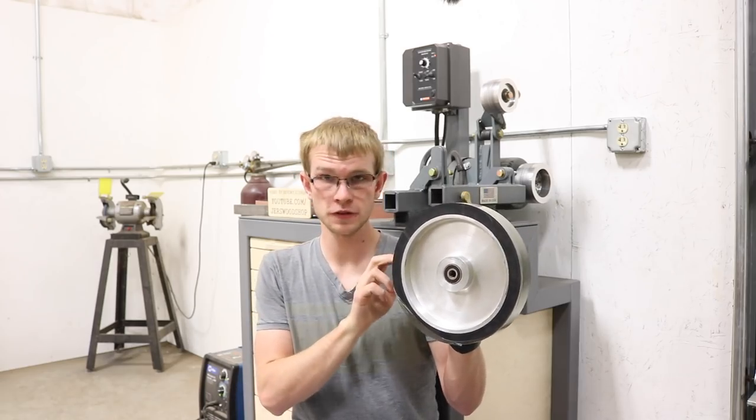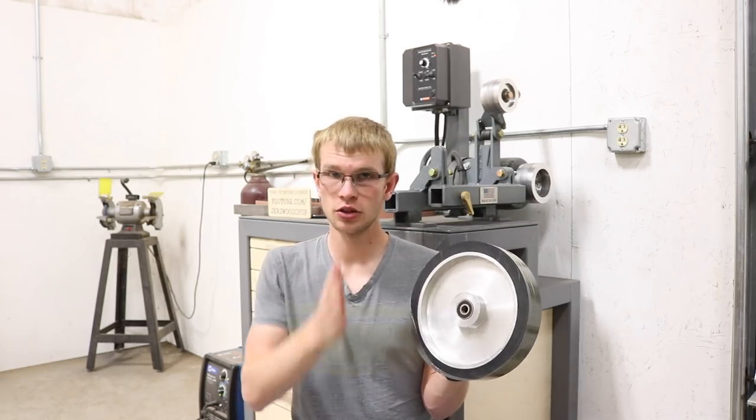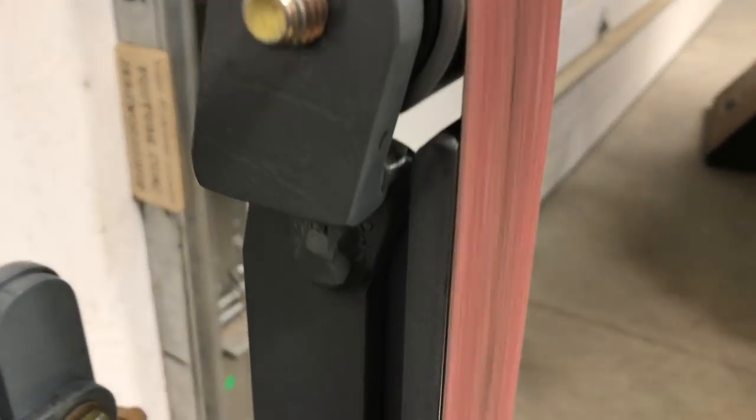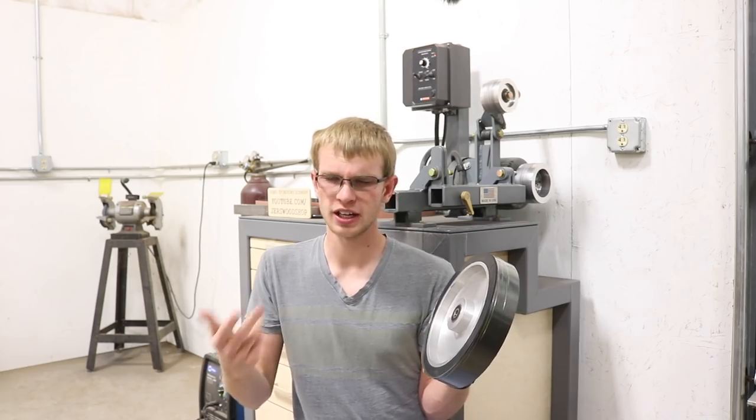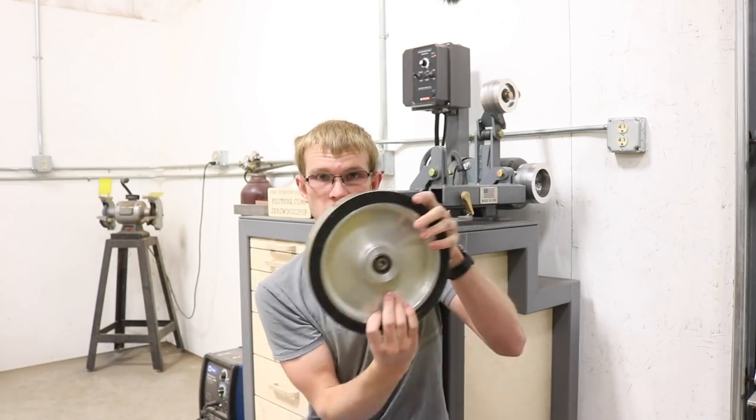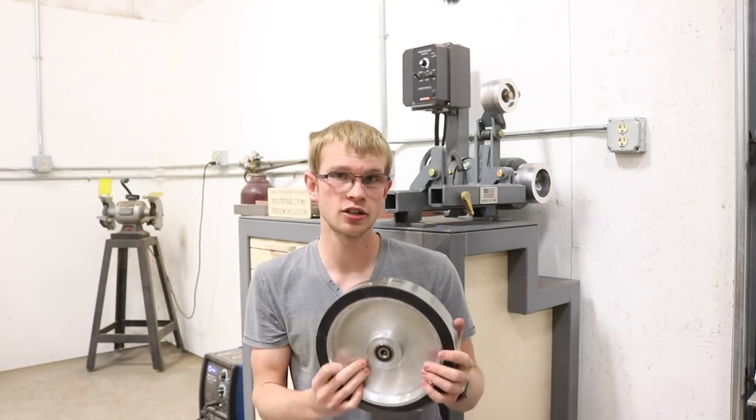These are also really good for efficient grinding. With a platen, the belt is sliding over the platen surface and that wastes a lot of energy in friction. It turns a lot of energy into heat instead of that energy being available to grind. Here the wheel is turning with the belt, so you're not losing hardly any energy to friction.